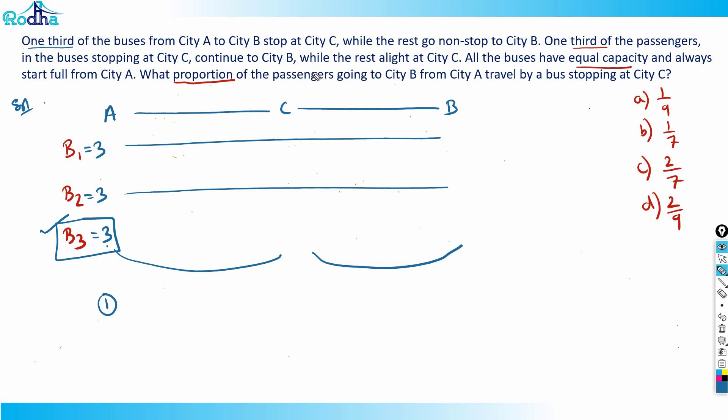One third of the passengers in the buses stopping at City C continue to City B. Out of three, one third is one - that means one person continues to City B while two persons stopped at City C.